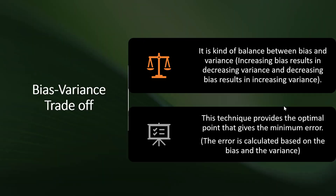We have another term to understand: the bias-variance tradeoff. It is a balance between bias and variance, which means that increasing bias results in decreasing variance, and decreasing bias results in increasing variance. This technique provides the optimal point that gives the minimum error, which is calculated based on both bias and variance.